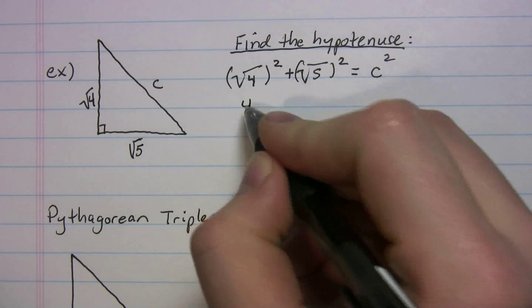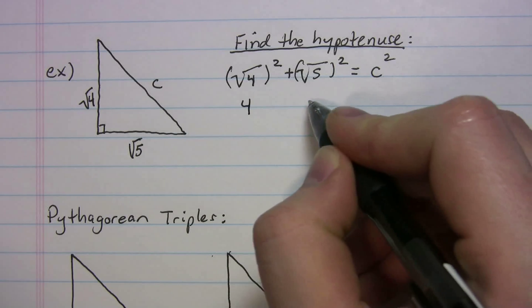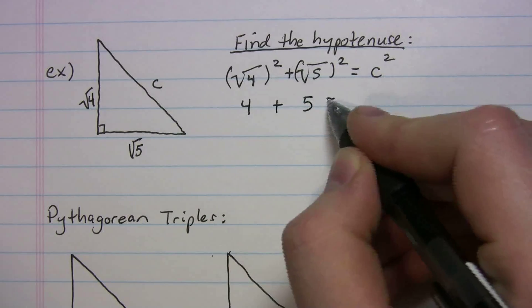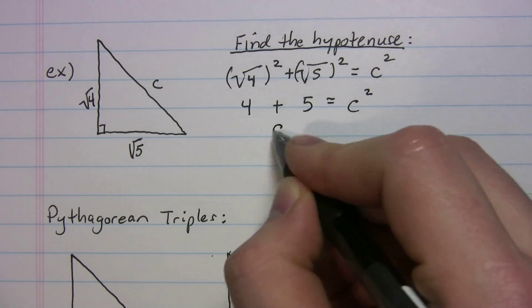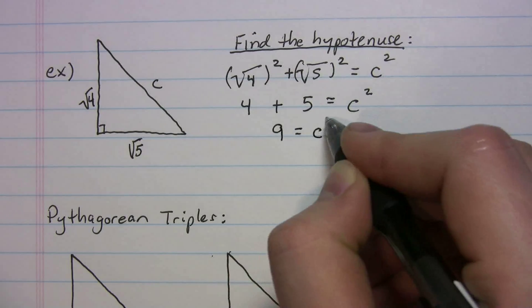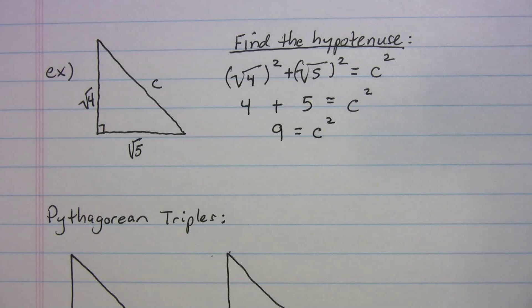Okay, so radical four squared, you just get four back. Radical five squared, you just get five back. So you get nine equals c squared.